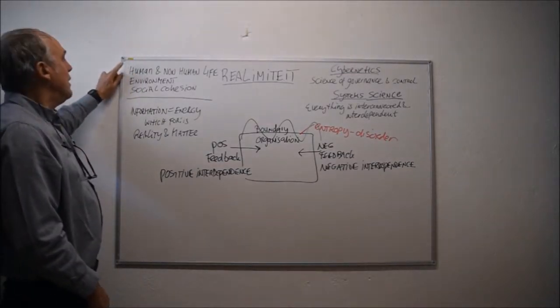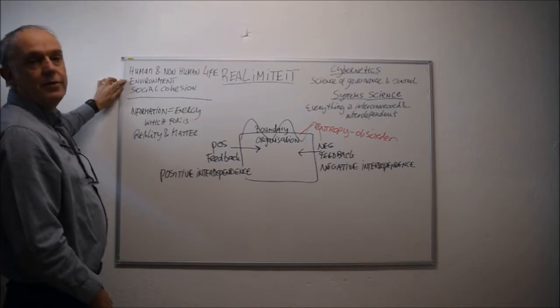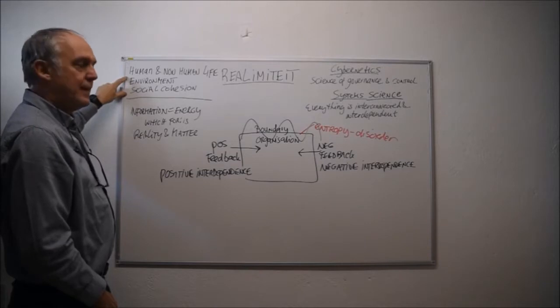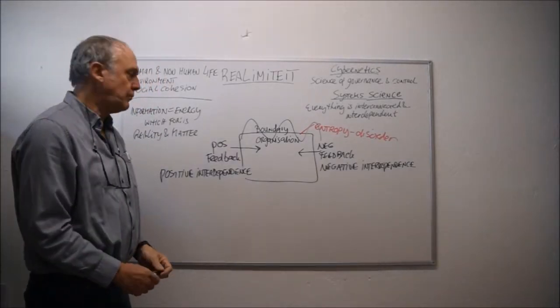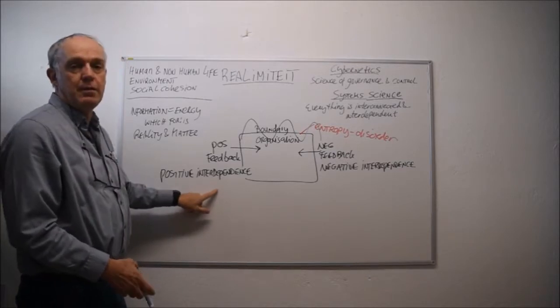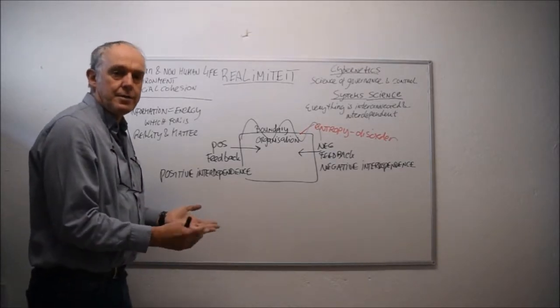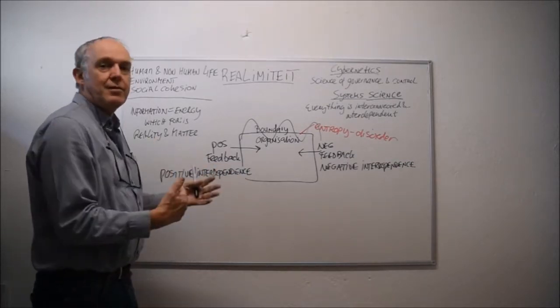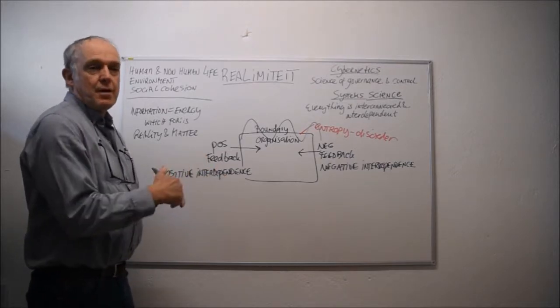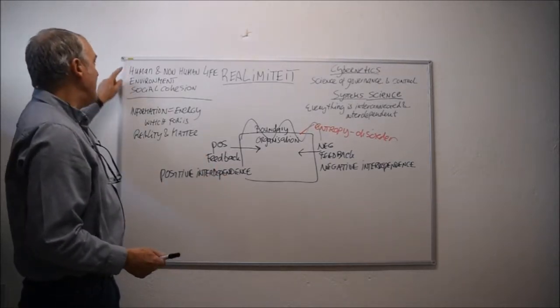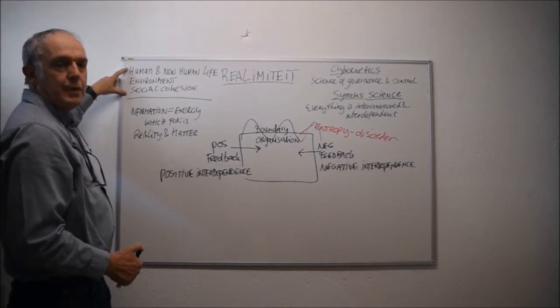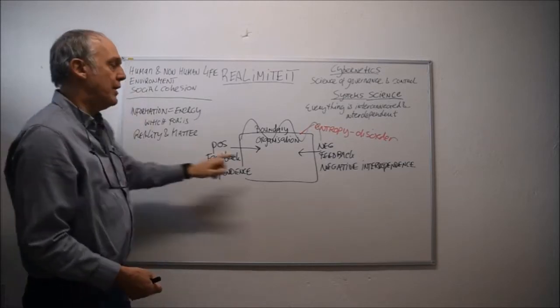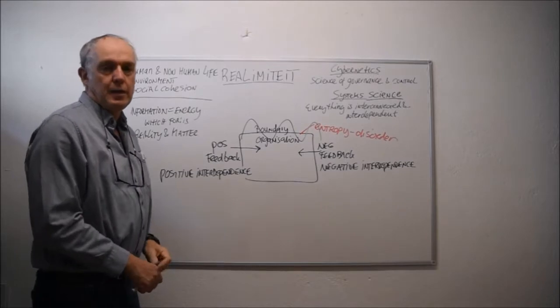For example, the three criteria here, I wrote human and non-human life, environment, social cohesion. If the organization has impact on these three, we call them negative interdependent. If an organization is positive interdependent, it will not harm anyone. It is beneficial to all, to all stakeholders, to all related industries, governments, everything. And it will not harm those three criteria. This is a question that every organization should ask themselves. Are we either negative or positive interdependent?